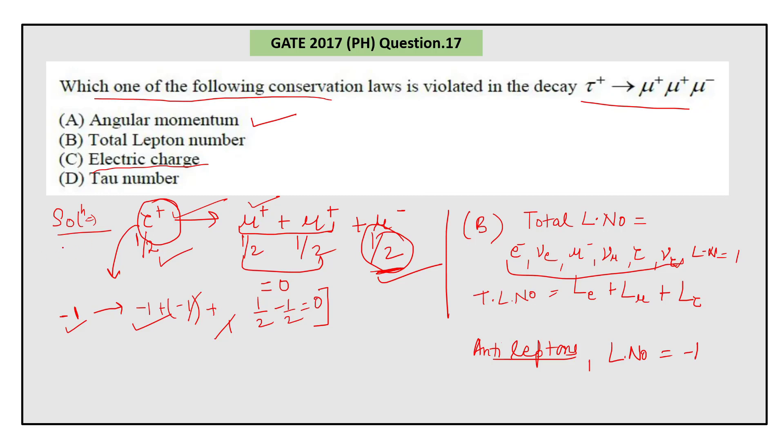Because here you can see, on the left-hand side, the tau lepton number is minus one. But on the right-hand side, there is no tau or any tau neutrino or anti-neutrino of tau. So that means D, tau number, is violating in this decay.